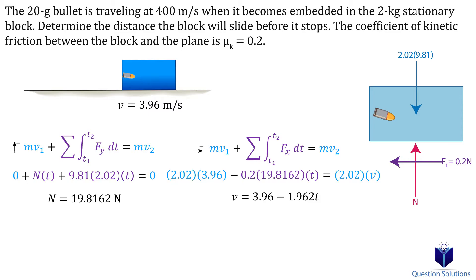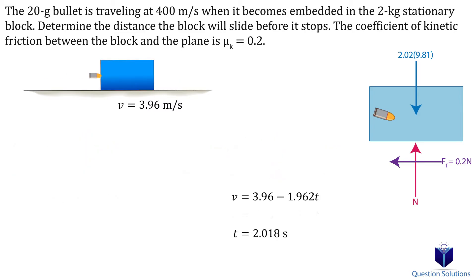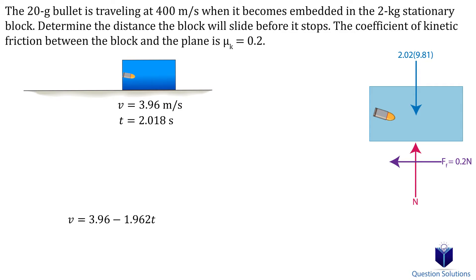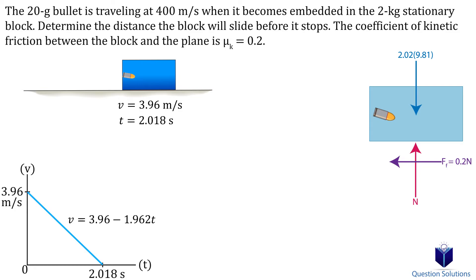To figure out when the block stops, we plug in zero for velocity and solve, finding it took the block 2.018 seconds to stop. An important note: you cannot simply multiply the velocity by that time. Friction continually slows the block down, which means we need an integral to find the displacement.